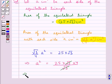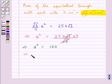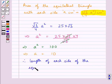So a square is equal to 100. That is we have a is equal to 10. So therefore the length of each side of the equilateral triangle is equal to 10 cm.